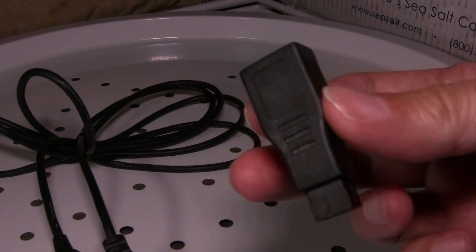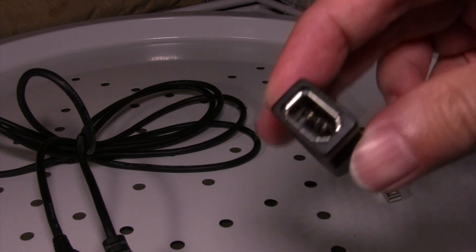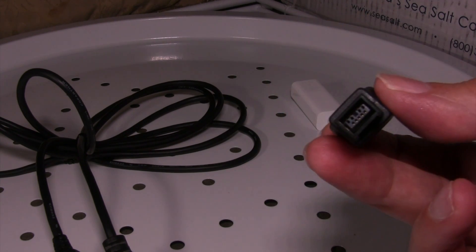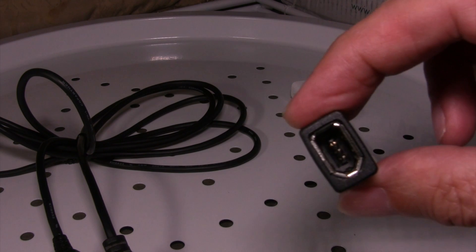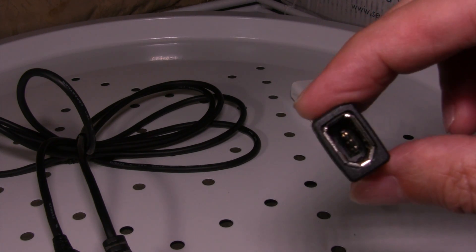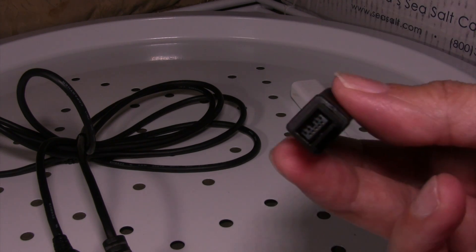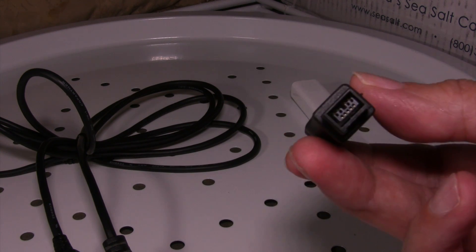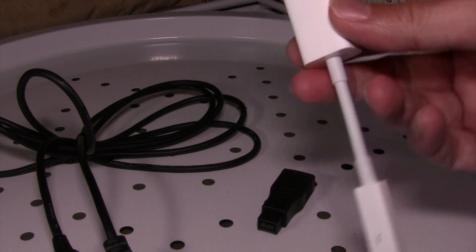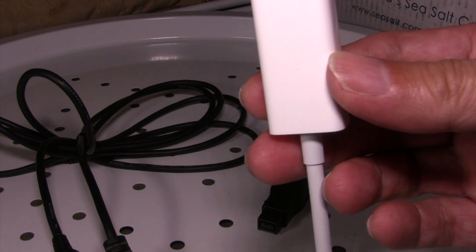I've got to have this adapter, which is FireWire in and FireWire out. This is a 6-pin connector, and this is a 9-pin connector. That 9-pin connector has to go into my Thunderbolt to FireWire adapter.